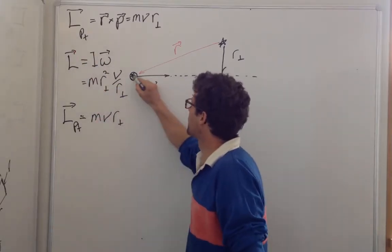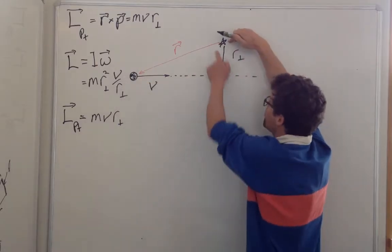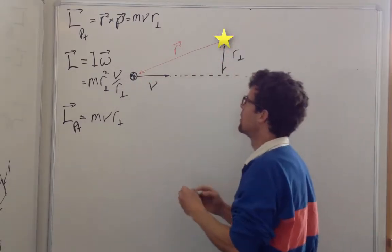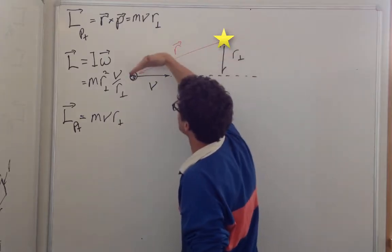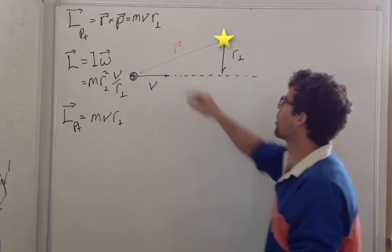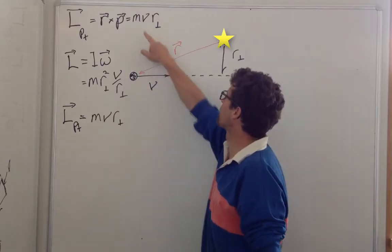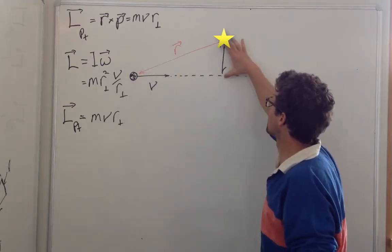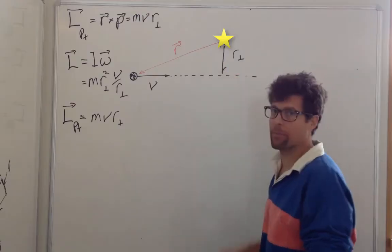The angular momentum for a point mass about some center point of rotation is equal to the radius vector across the momentum of that particle. Or mass times velocity of the particle times the perpendicular radius, called the impact parameter.